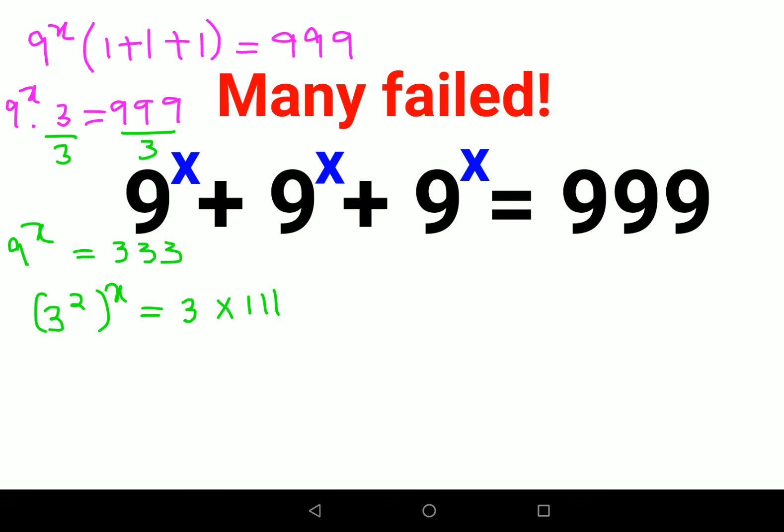Remember in indices, when you have (a^m)^n, this can be written as a^(mn). So this becomes 3^(2x) = 3 times 111.